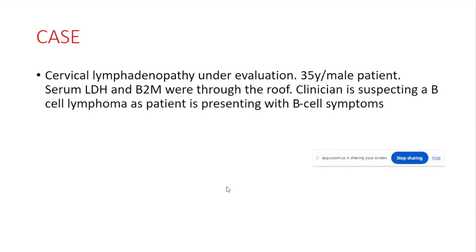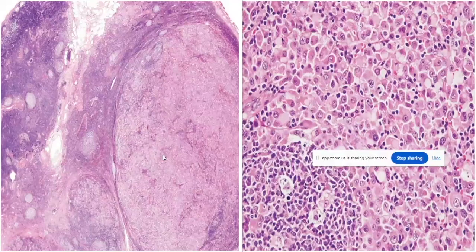Cervical lymphadenopathy is under evaluation in a 35-year-old male patient. Serum LDH and beta-2 microglobulin are elevated. The clinician is suspecting a B-cell lymphoma as the patient is presenting with B symptoms, so we'll go further and look at the histopathological image.